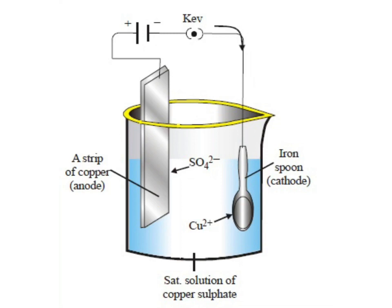This is because when electric current is passed through copper sulfate solution, the dissolved copper metal gets attracted to the negatively charged electrode — the iron key. The positively charged copper ions lose their positive charge on coming in contact with the negatively charged iron key and form copper atoms. These copper atoms deposit on the iron key to form a thin layer of copper metal all over its surface. In this way, copper metal in the electrolyte comes out of the solution and forms a thin layer on the iron key.